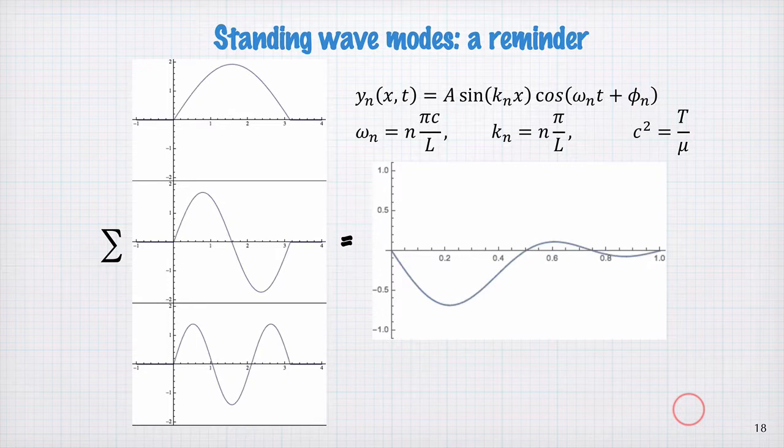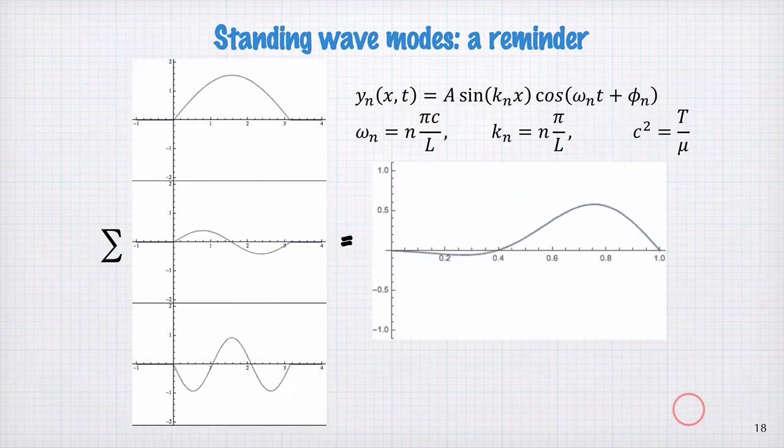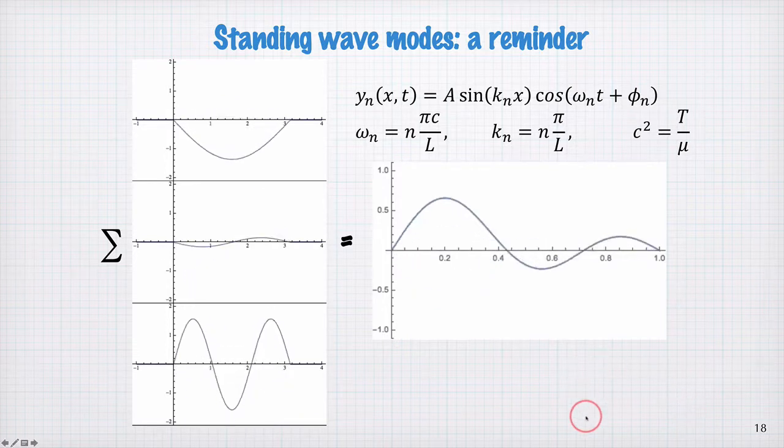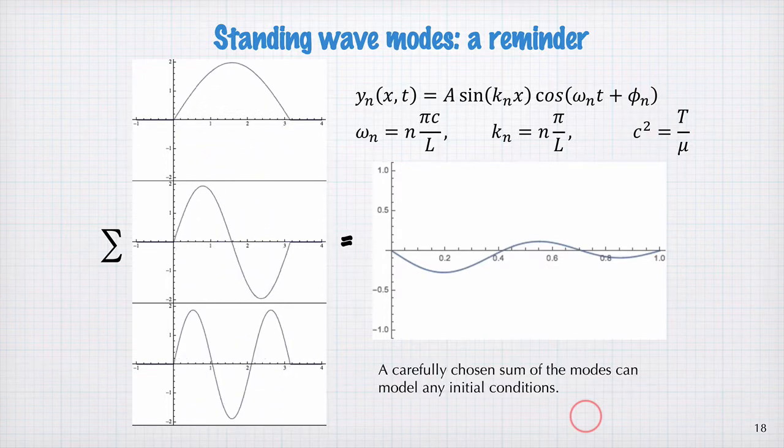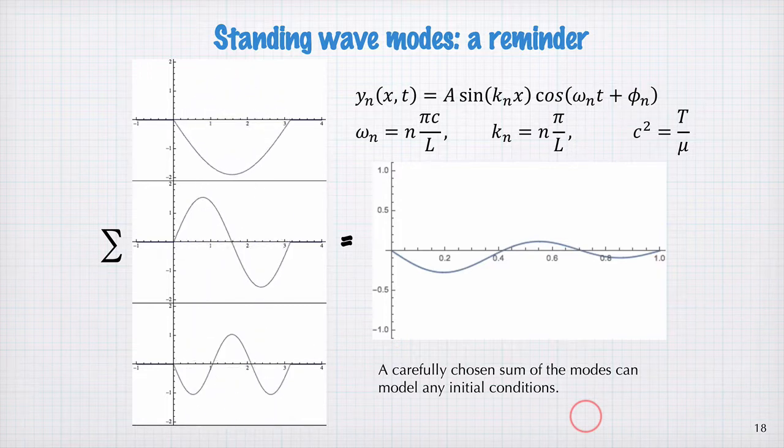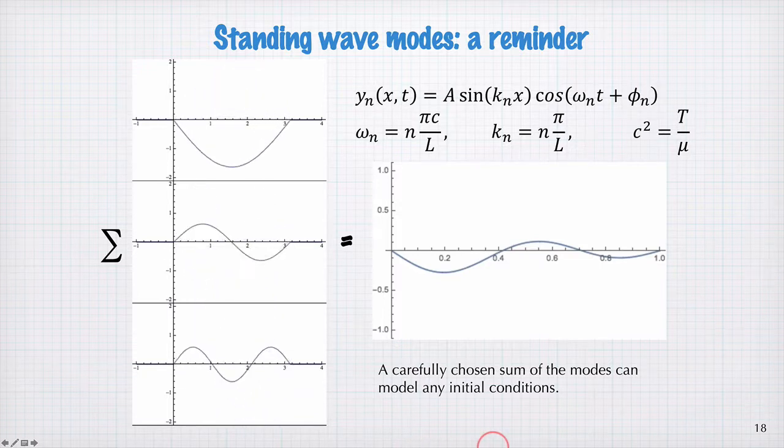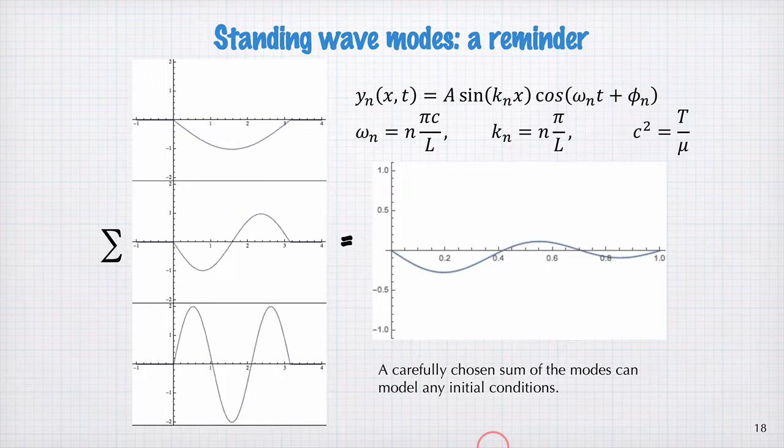Now, my claim is, and this is reasonable given what we've seen with the Fourier series that we've been talking about, is that if we have some initial condition of the string with some arbitrary initial shape, then we can write that down as a sum of the modes with carefully chosen amplitude and phase, such that the initial condition is expressed as a sum of the modes in this standing wave basis. Then, to evolve the string in time, we just let each of the modes evolve with the correct frequency, and we can see how the string will evolve.